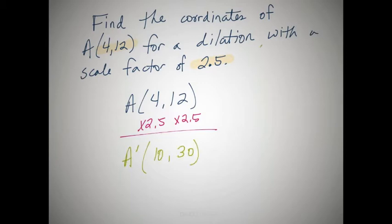And when we do that, we get our new coordinates of (10, 30). This new coordinate is now called A prime. A being our original, A prime being our dilation.